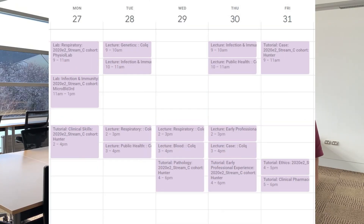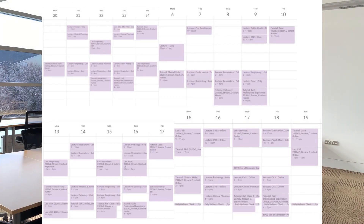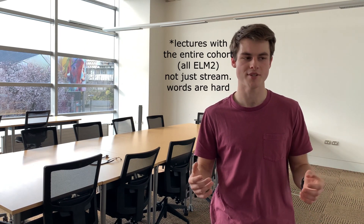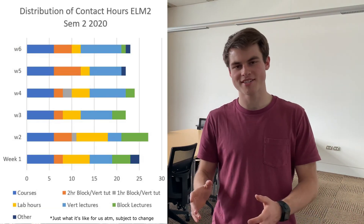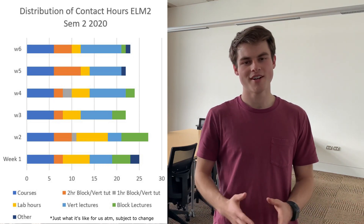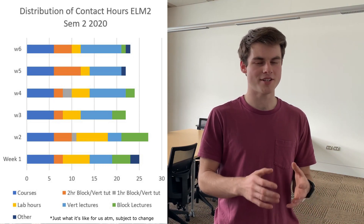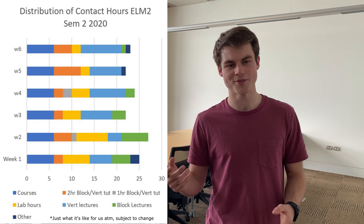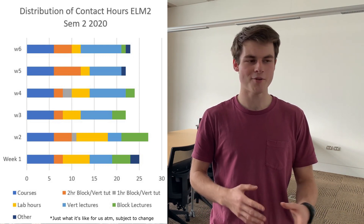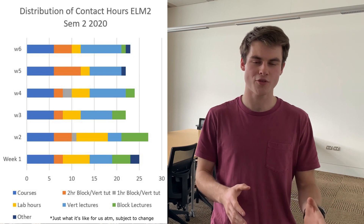Your entire ELM cohort gets divided into four streams at the start of the year — A, B, C, and D. Everyone in your stream is who you do all your tutorials and labs with, whereas lectures are with the entire cohort at Colquhoun. Looking at the time breakdown this semester, it's a bit all over the place — some weeks you have lots of labs, some weeks you don't. You end up spending roughly the same amount of time in tutorials and labs as you do in lectures, making a total average of about 23 hours a week in med versus around 16 hours of contact time in health sciences.